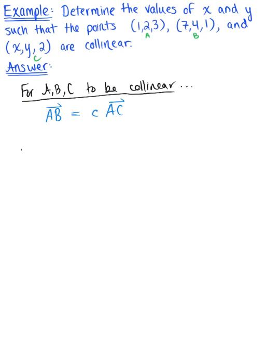So let's find them. So here we go. We're starting with vector AB. So we have 7 minus 1, 4 minus 2, and 1 minus 3, leaving us with the final answer of 6, 2, negative 2.